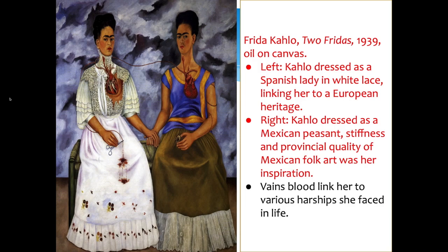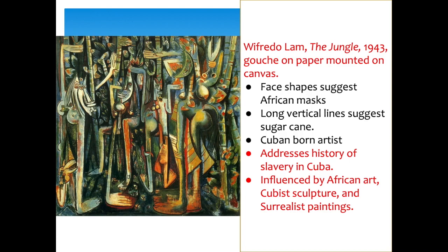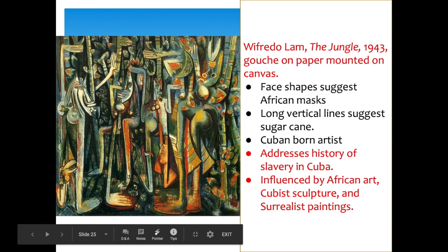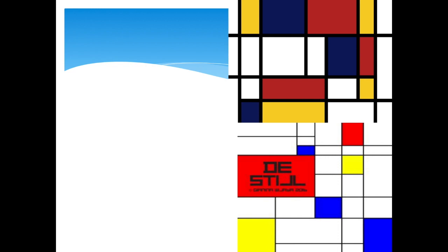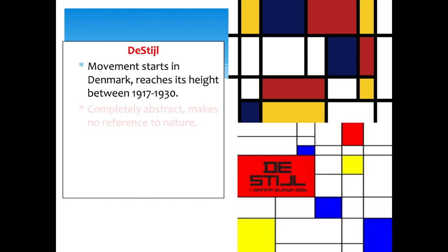Wifredo Lam painted The Jungle, done on paper mounted on canvas. Some faces are visible throughout the composition, influenced by African masks. Lam was a Cuban artist addressing the history of slavery in Cuba, influenced by African art, Cuban sculpture, and Surrealist paintings. The long vertical lines represent slaves picking sugarcane — you can see the long stalks — and the work reflects the influence of that history on contemporary Cuban culture.